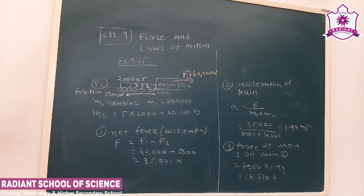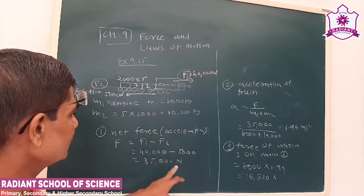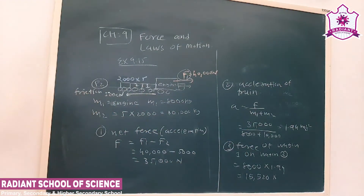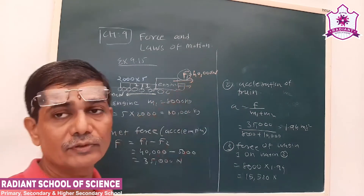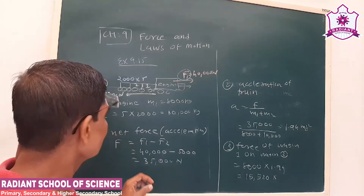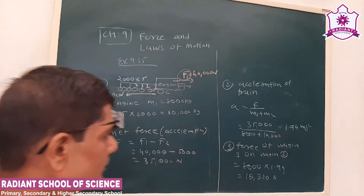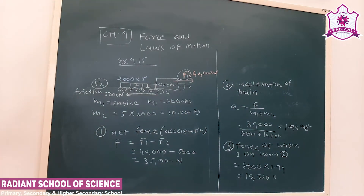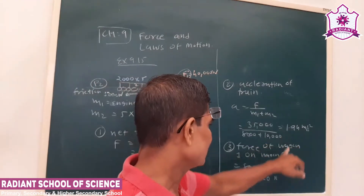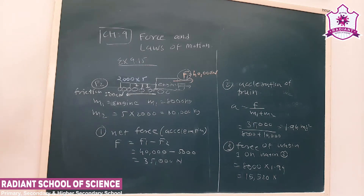The force on wagon 1 is mass of remaining wagons times acceleration: 8,000 into 1.94 gives us 15,520 Newtons. Using F equals ma, the total mass of engine and wagons is 18,000 kg, net force is 35,000 Newtons, acceleration is 1.94 meters per second squared, and force on wagon 1 from wagon 2 is 15,520 Newtons. This completes exercise number 9.50.